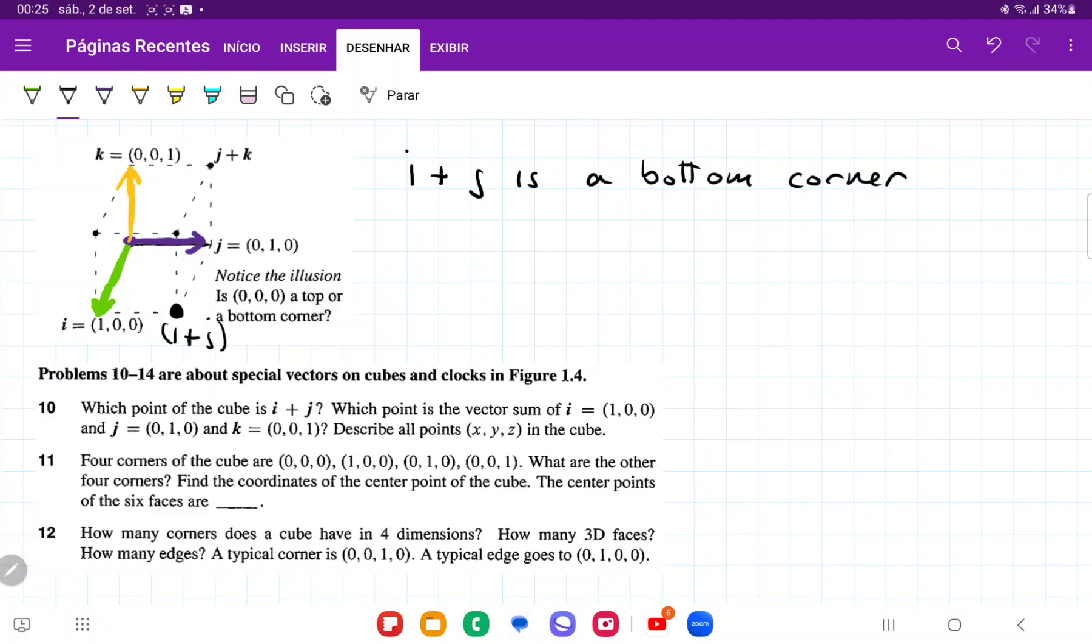And then it's asking us what is the point of the sum i plus j plus k? So we already have the point i plus j, and now we just need to add k to it, and k is the upwards direction.